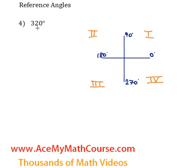Okay, so 320 is greater than 270, but is smaller than 360. So it must be in the fourth quadrant.